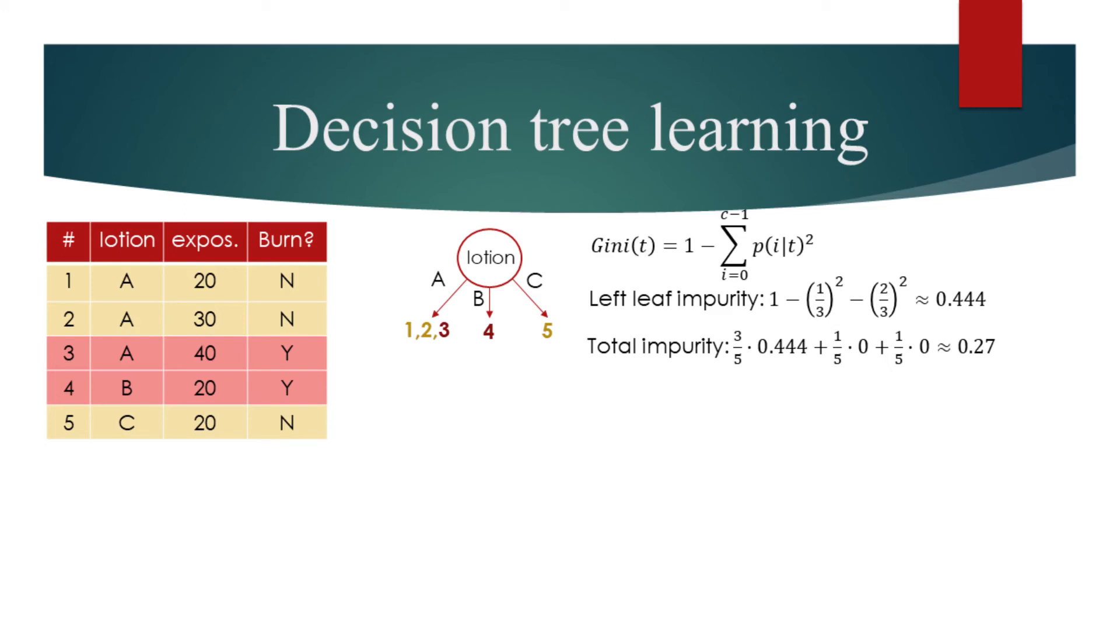We shall now try if we can get a lower impurity score if we start splitting based on the exposure instead. For simplicity, we will only consider the binary splits. We determine the comparison tests for the binary splits by sorting the distinct continuous attributes and calculating the average values of the adjacent pairs.